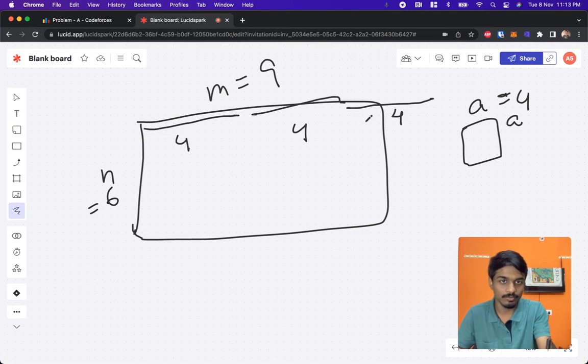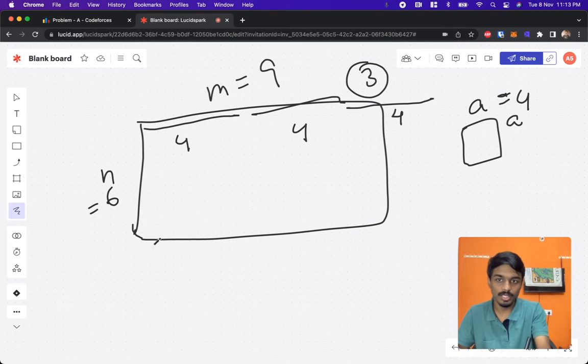How much can we cover with one 4? Still two more will be left, right? Four, five, six. So we will do one more 4.